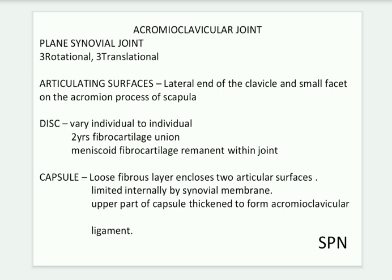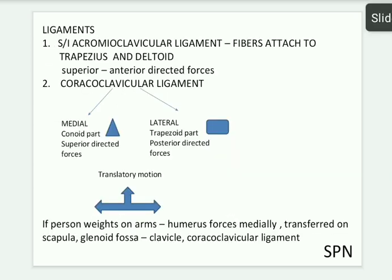The capsule is internally covered by the synovial membrane, and the upper part of the capsule is thickened, forming the acromioclavicular ligament. The superior and inferior acromioclavicular ligaments have fibers attached to the trapezius and deltoid muscles. The superior acromioclavicular ligament has forces directed anteriorly.